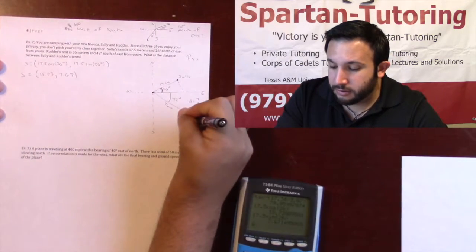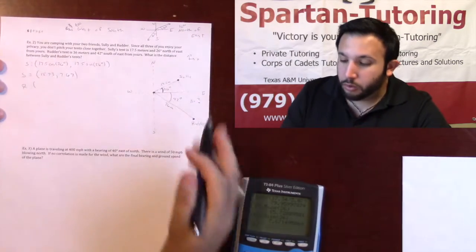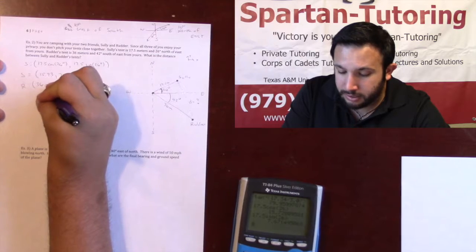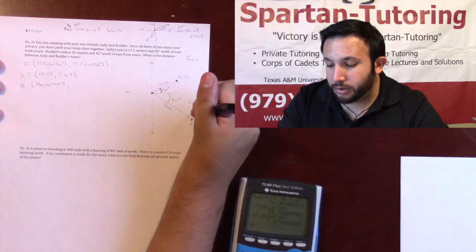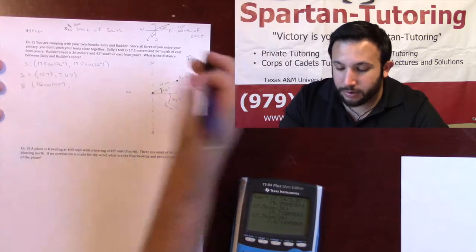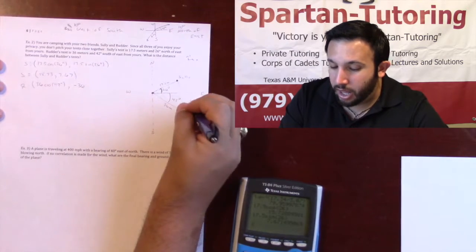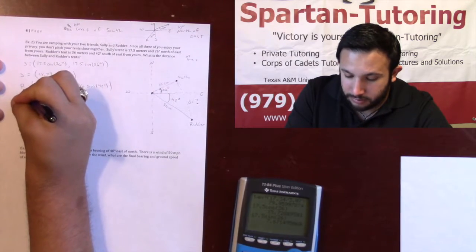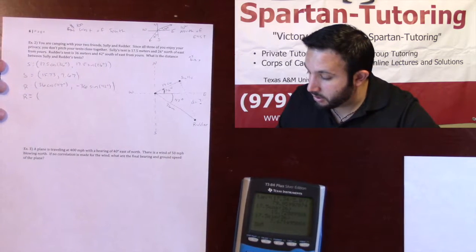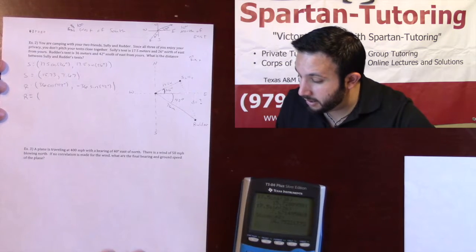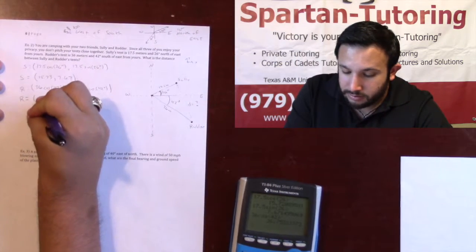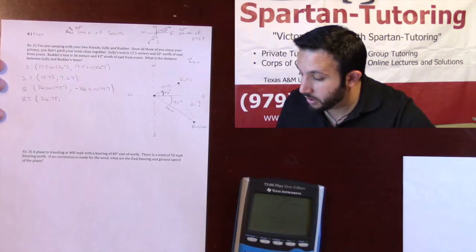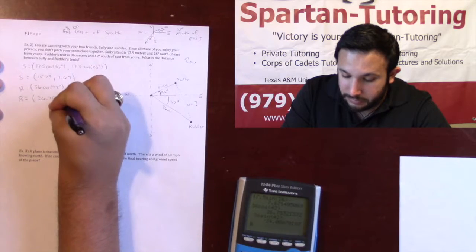Now let's find Rudder's coordinates. The x-component is positive and adjacent to the angle: 36 cosine(42°) = 26.75. The y-component is negative — it goes in the negative y direction — and opposite the angle: −36 sine(42°) = −24.09. So Rudder's point is (26.75, −24.09).